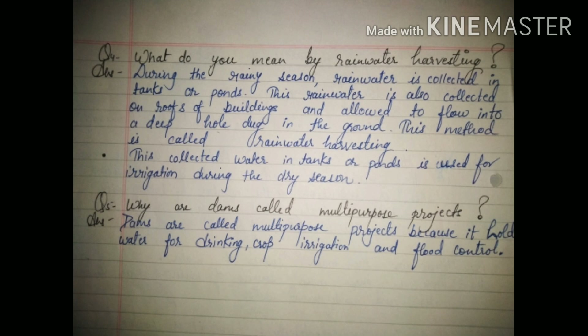With question four you also have to make a diagram of rainwater harvesting on the left side of the notebook on the blank sheet — I will show the diagram in the next slide. Question five: why are dams called multipurpose projects? Answer: dams are called multipurpose projects because they hold water for drinking, crop irrigation, and flood control.